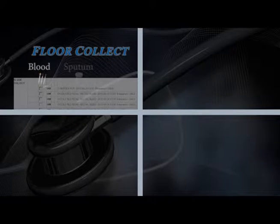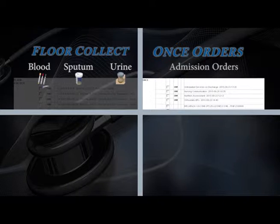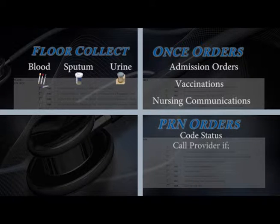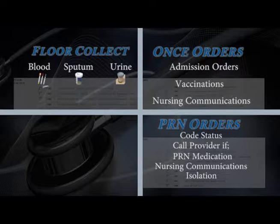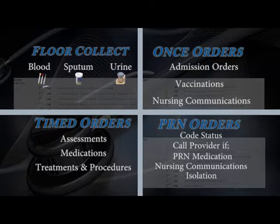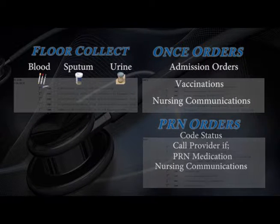The first section is a list of floor collect items such as blood, sputum, or urine cultures. A once order section is where you will find some of your admission orders, vaccinations, and nursing communications. PRN orders such as code status and call the provider if orders, PRN medications, ongoing nursing communication orders, and if a patient is in isolation, you will see that in this section. The fourth section contains all of your timed orders, assessments, medications which are due to administer, plus timed treatments or procedures.